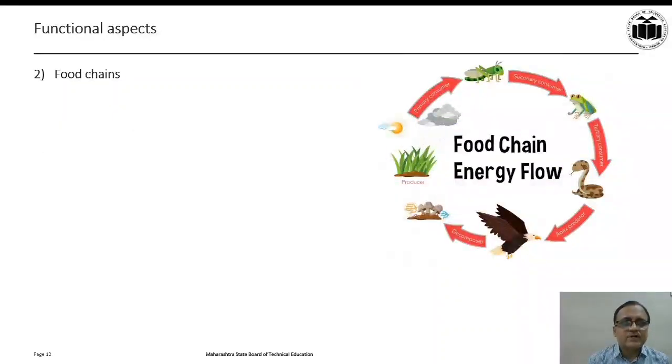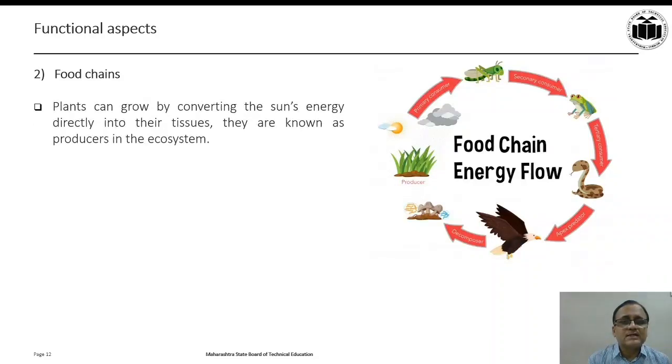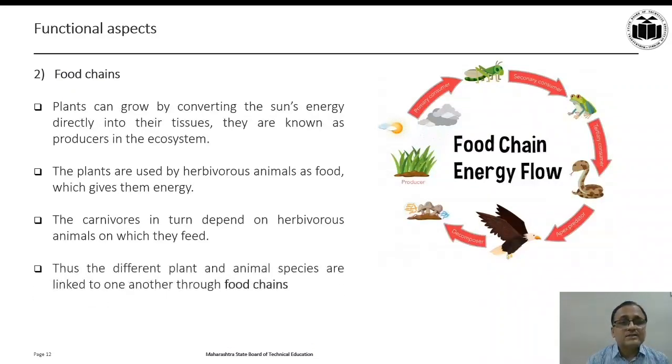Second functional aspect is regarding food chains. Plants can grow by converting the sun's energy directly into their tissues. They are known as producers in the ecosystem. The plants are used by herbivorous animals as food which gives them energy. The carnivores in turn depend on herbivorous animals on which they feed. Thus the different plant and animal species are linked to one another through food chains.